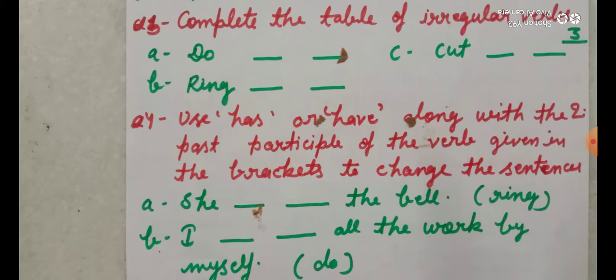use has or have along with the past participle of the verb given in the brackets to change the sentences. There are some sentences, incomplete sentences and there are the verbs in the brackets. Bracket me aapko verb diye huye hai. Aapko subject ke according has or have ko choose karna hai aur verb ka third form.